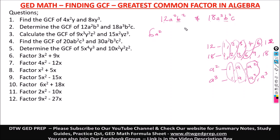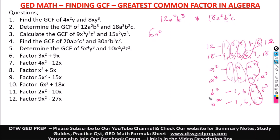For the variable b: we have b² and b³. Factors of b³ are 1, b, b², b³; factors of b² are 1, b, b². The greatest common factor is b². For the variable c: c appears only in 18a³b²c, not in 12a²b², so c is not a common factor. Our final answer is 6a²b².